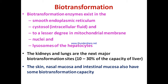In liver cells and other tissues, biotransformation enzymes exist in the smooth endoplasmic reticulum, cytosol, and to a lesser degree in mitochondrial membranes, nuclei, and lysosomes. After the liver, the kidneys and lungs are the next major biotransformation sites, performing around 10 to 30 percent of the liver's capacity. The skin, nasal mucosa, and intestinal mucosa also have some biotransformation capacity.